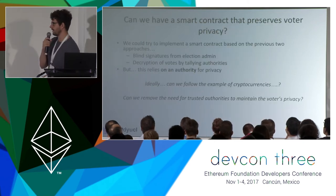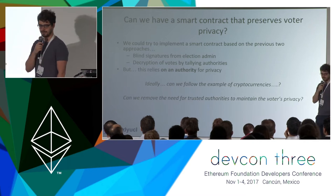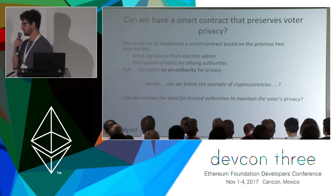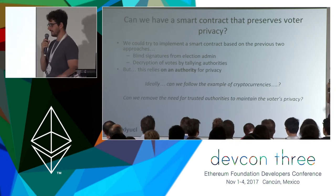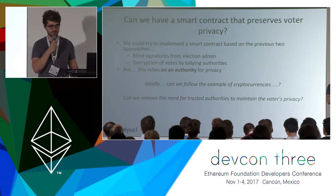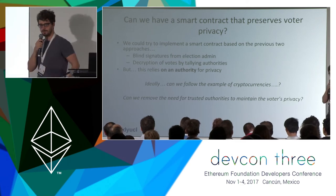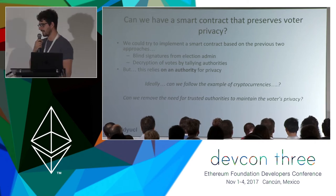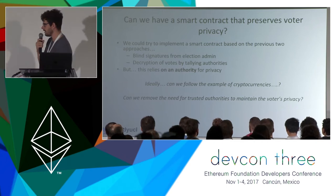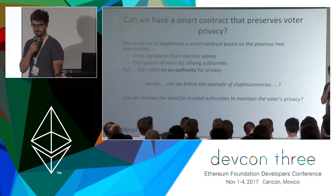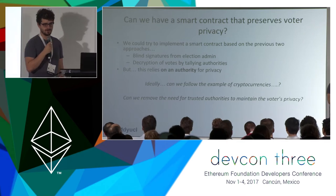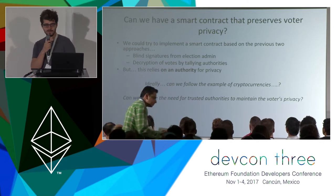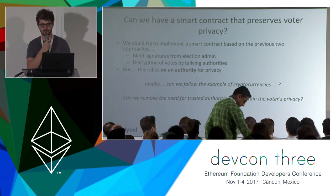I wanted to see if we can do something better — can we build a smart contract that can guarantee voter privacy? There are two different ways to approach this: one is blind signatures, and the other is where I encrypt my vote under a well-known public key. But both approaches rely on some type of authority. I wanted to follow the example of cryptocurrencies — can we remove the need for any tallying authority and do it in such a way where a voter is in control of their own privacy?